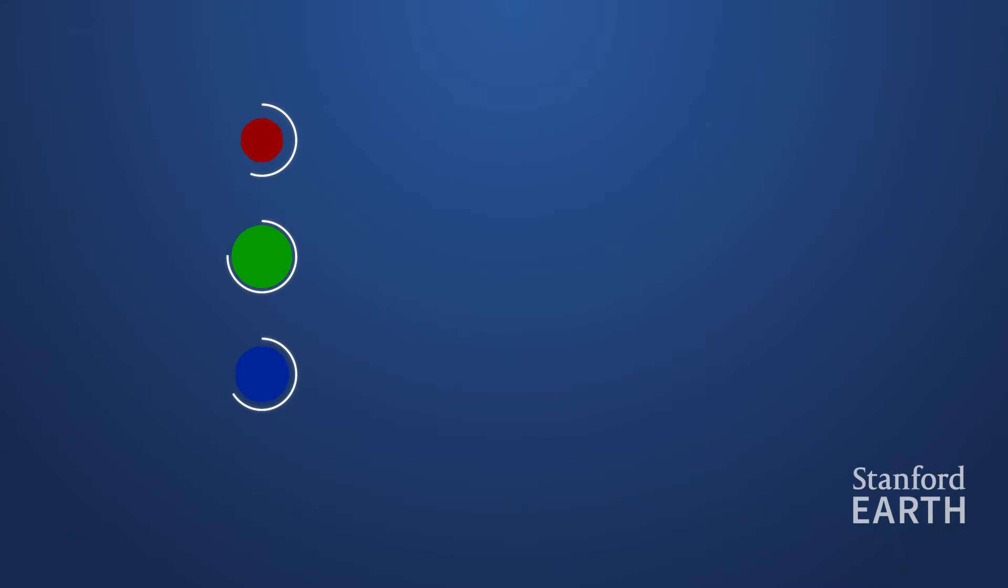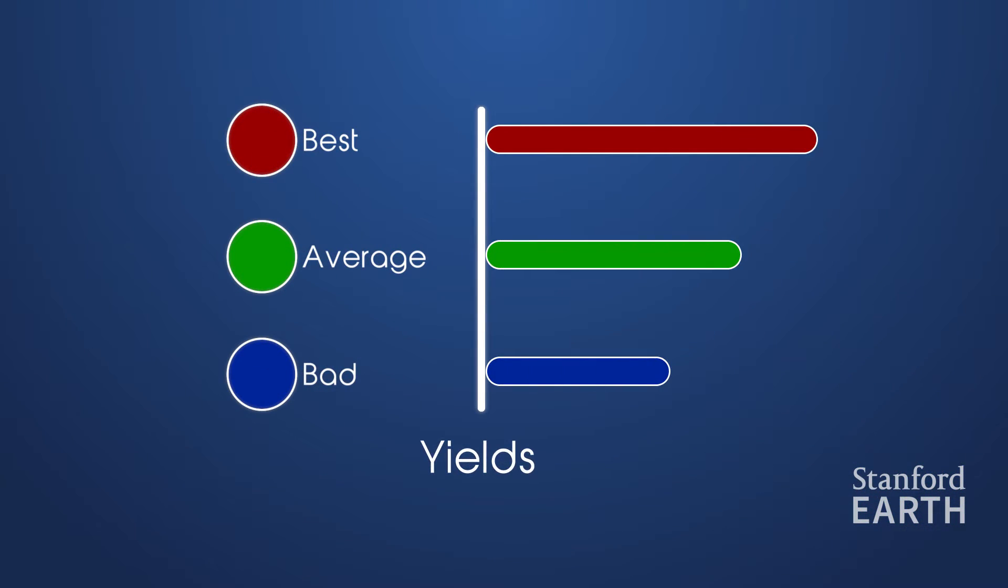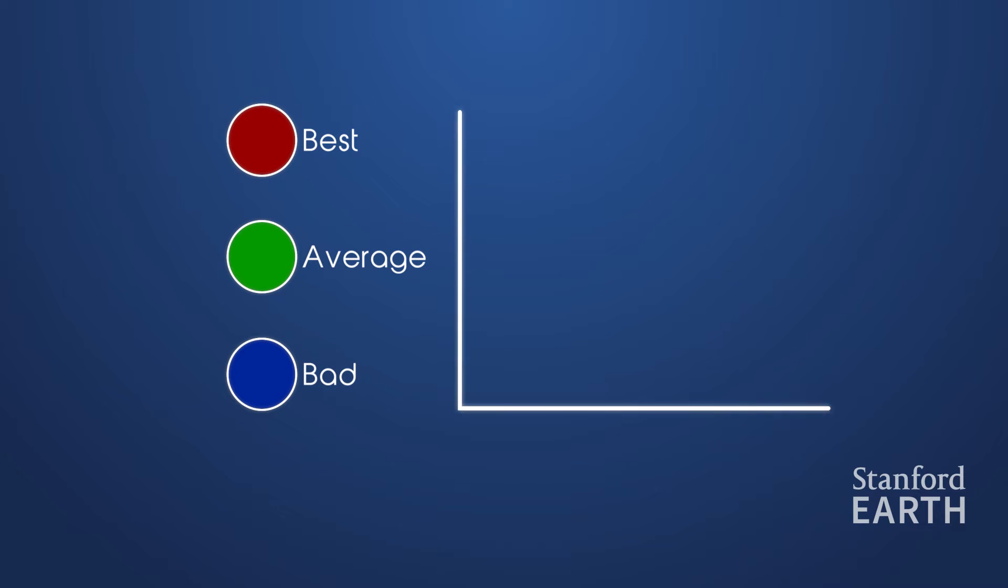What we can see right away is that yields are very spatially variable. For a typical county, the best areas have yields roughly 30% higher than average, and roughly twice as high as the worst fields.